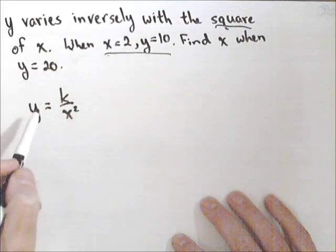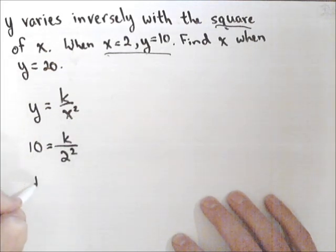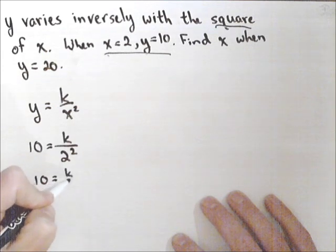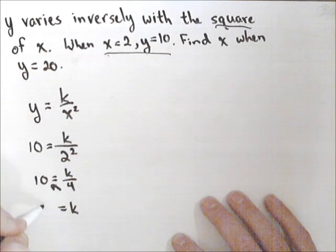Now we use this information to find k, because we know that y equals 10 when x equals 2, so we get 10 equals k over 4, so we can cross multiply that 4, and we get k equals 40.